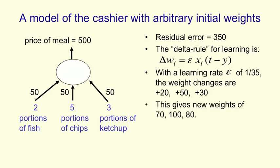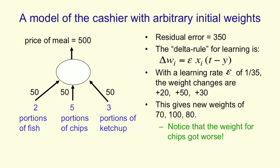That gives us new weights of 70 and 80. Notice the weight for chips actually got worse. There's no guarantee with this kind of learning that the individual weights will keep getting better. What's getting better is the difference between what the cashier says and our estimate.